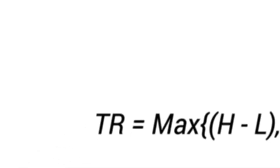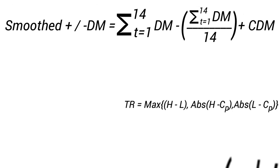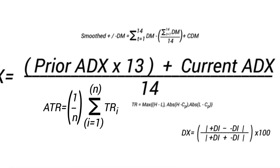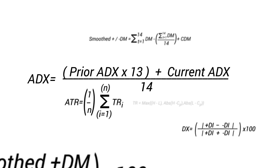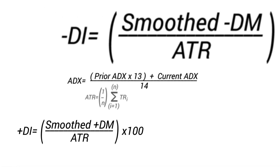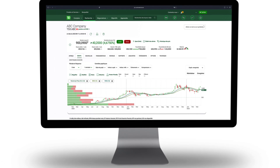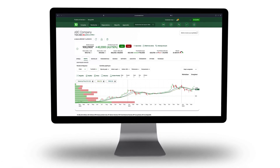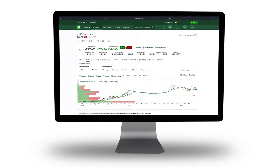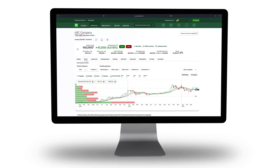Indicators apply mathematical formulas to a stock's price action to generate buy and sell signals. Some formulas are simple, others are more complex. Fortunately, WebBroker does the math for you, meaning you can use them even if you're new to trading or didn't do so well in high school math.